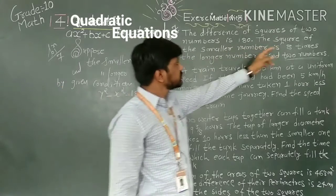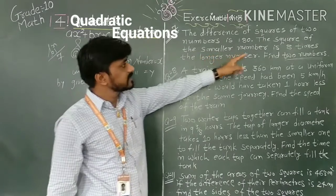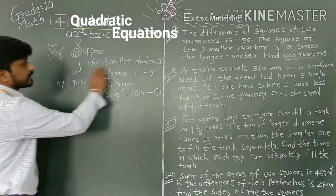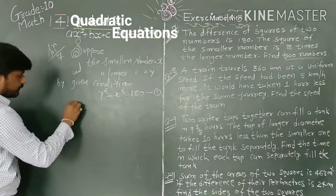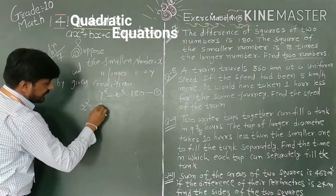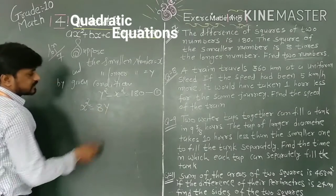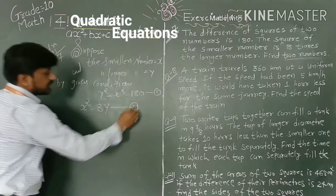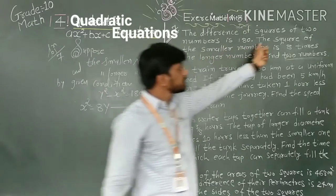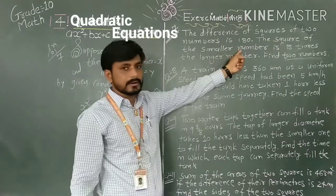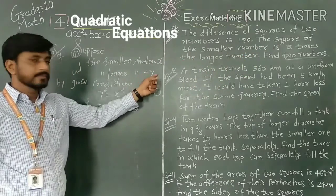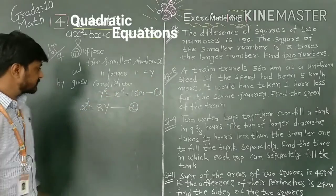Now the second condition: the square of the smaller number is 8 times the larger number. The smaller number is x, so x² = 8y. This is our second equation. We have not squared y because here only the square of the smaller number equals 8 times the longer number.